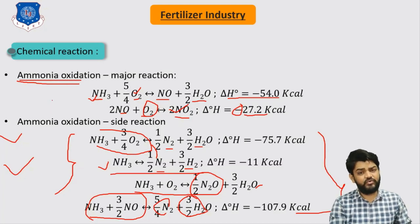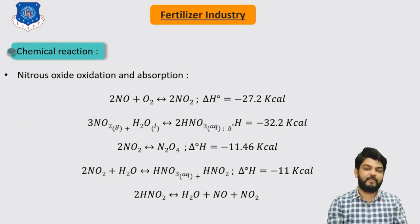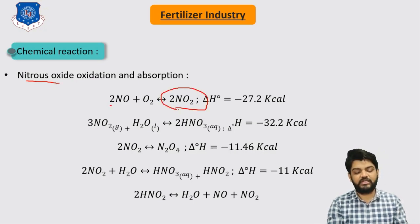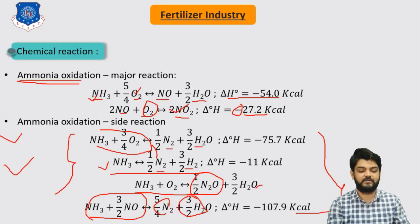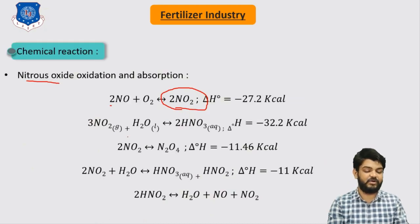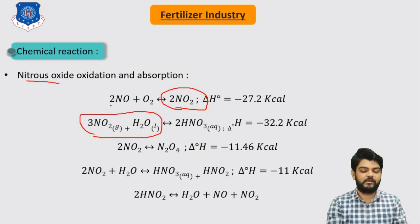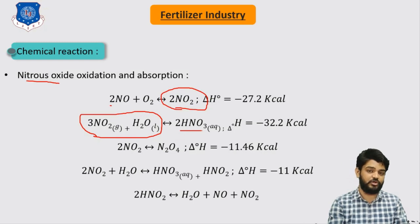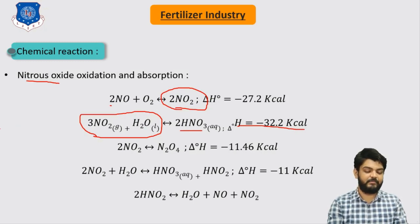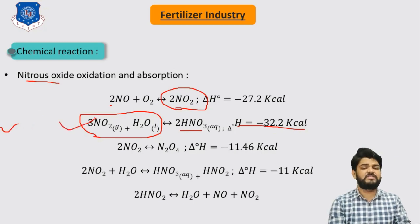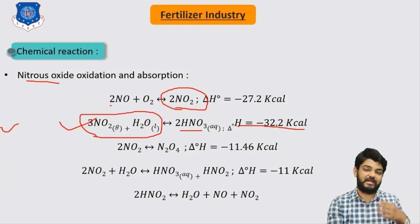Now let's move to the third reaction, in which we produce nitric acid from NO2. We have already produced NO2 in the oxidation step. This NO2 is now absorbed in water in order to produce 2 moles of nitric acid as an aqueous solution. This reaction is also exothermic with a heat of 32.2 kilocalories. This is the main reaction by which our main product is produced — absorbing NO2 in water to produce HNO3.